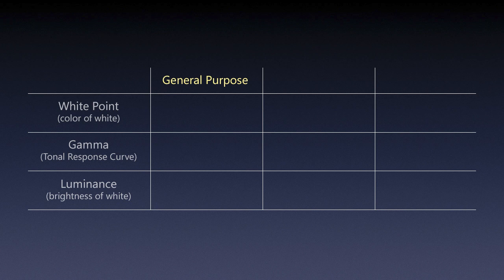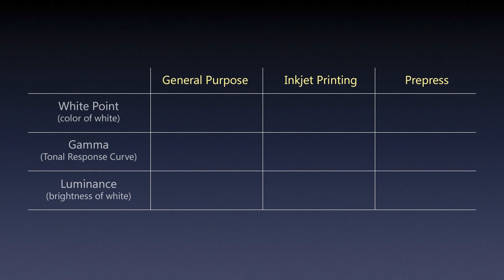I divided it into three categories depending on your needs: general purpose, inkjet printing, and pre-press. General purpose would be something where you're not too serious about printing your own work and you just need to calibrate your monitor to match the web, or if you're posting everything on the web and just need the common calibration settings that give you the best compromise.